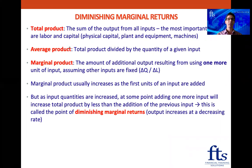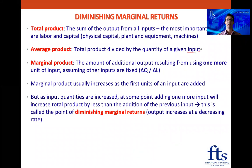The average product is the total product divided by the quantity of a given input. So let's say the input is the number of laborers. A company making tables makes 20 tables with four workers, so 20 divided by four is five — the average product per worker is five tables.